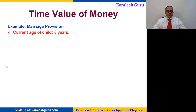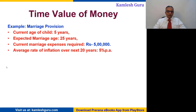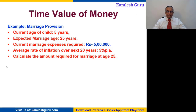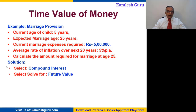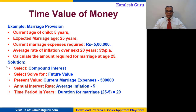For marriage provision: suppose the current age of your child is five years and the expected marriage age is 25 years. Current marriage expenses are assumed to be five lakh rupees. The average rate of inflation over the next 20 years is five percent — meaning marriage expenses increase by five percent every year. Calculate the amount required for the marriage at age 25. Select compound interest in the TVM calculation and solve for future value.